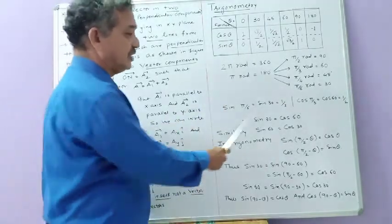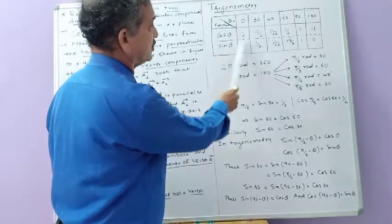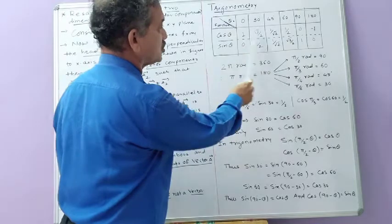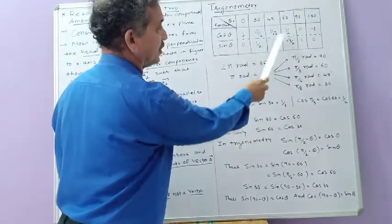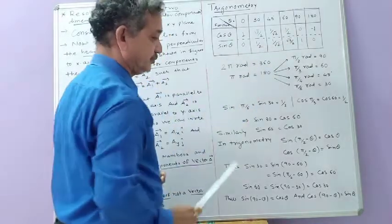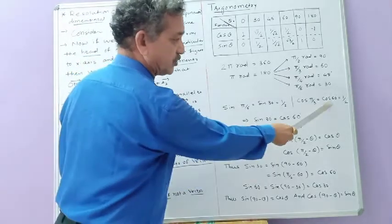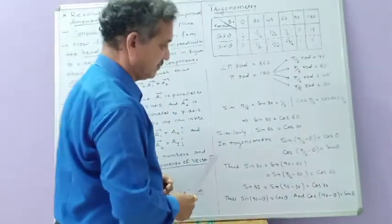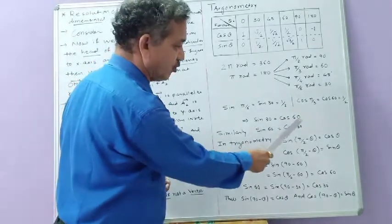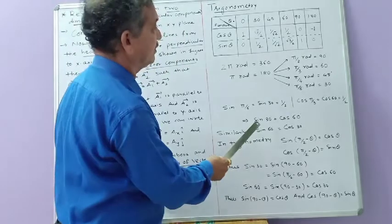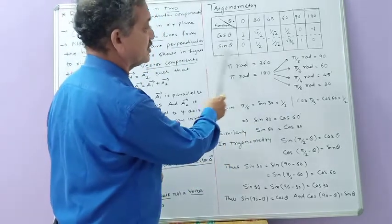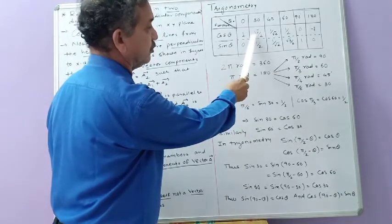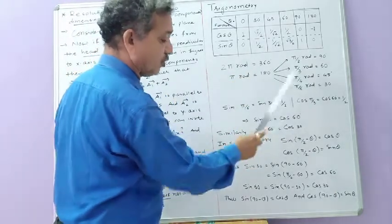For example, sin 30° is 1/2, and at the same time cos 60° is also 1/2. So we can write sin 30° = cos 60°, or sin(π/6) = cos(π/3). Similarly, sin 60° is √3/2 and cos 30° is also √3/2, so one can write sin 60° = cos 30°.